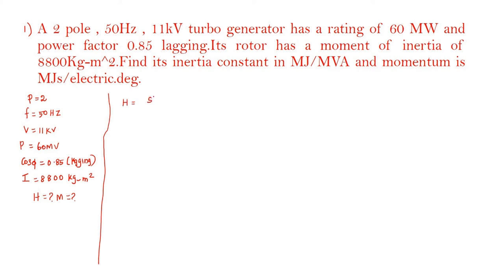Inertia constant is equal to stored energy divided by power rating of the machine. Here, H is equal to the stored energy, which is kinetic energy, and power rating is given as G.